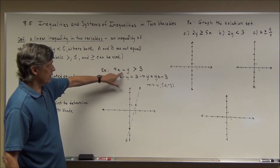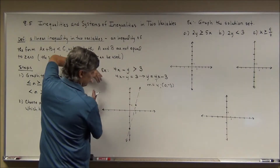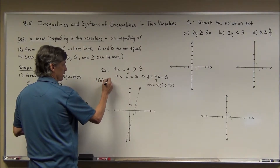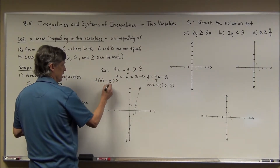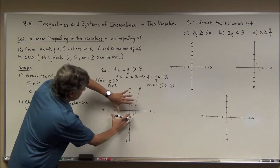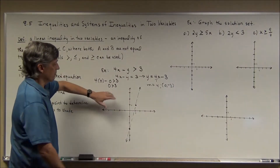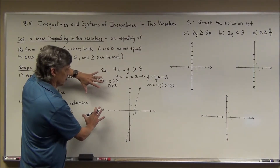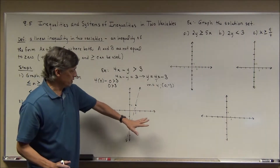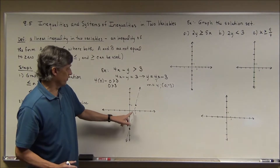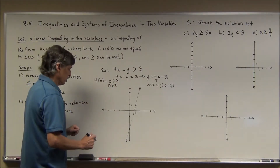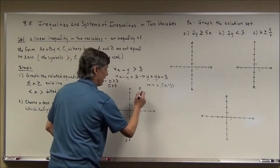I substitute (0, 0) back into the original inequality 4x minus y greater than 3: 4(0) minus 0 gives 0, and 0 is not greater than 3. So (0, 0), which is in the upper-left half plane, makes the statement false. That means every point in that half plane makes it false, so by process of elimination, the half plane down and to the right has the solutions.